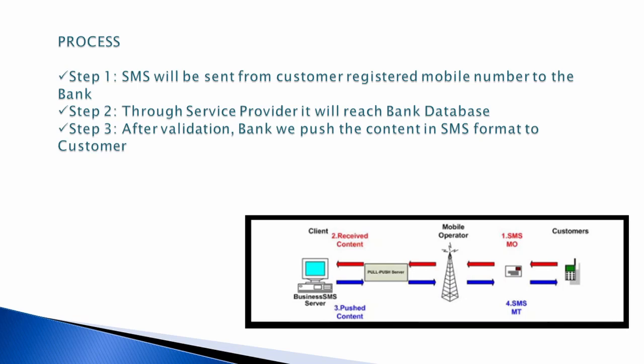The SMS reaches the bank database through the service provider — it can be Idea, Airtel, or Jio. After validation, the bank will validate the mobile number and the format. Then the bank will push the content in SMS format to the customer. As shown in the example, the customer sends an SMS to the bank through the mobile operator, the bank receives and verifies the information, then sends the requested information back to the customer's mobile number.